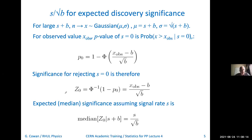Let's convert this to the corresponding significance. That involves applying phi inverse to one minus the p-value. You'll notice that the phi inverse and phi cancel each other out, and I'm left with a very simple formula for the significance: it's the value of the variable I observe minus b over root b. If I want to give the expected value of that significance, I take the expectation value of this quantity under the assumption of s plus b for the mean value. The expectation value of x under s plus b is s plus b. Therefore I get s plus b minus b over root b — that's my s over root b. Done.